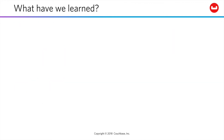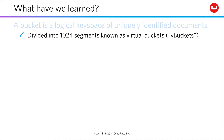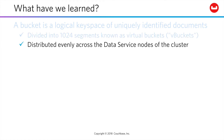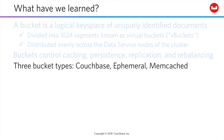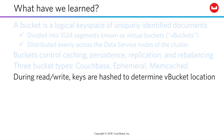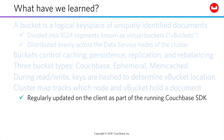So what have we learned? A data bucket is a logical key space of uniquely identified documents, divided into 1,024 segments known as v-buckets, and evenly distributed across data service nodes in the cluster. Data buckets are the control mechanism for caching, persistence, replication, and rebalancing. There are three types: Couchbase, which persists to disk; ephemeral, which are full-featured buckets but do not persist to disk; and memcached, for traditional narrow caching behavior. During read-write operations, document keys are hashed to determine which v-bucket and node will hold the document, and these locations are tracked in the cluster map, which is regularly updated on the client by the SDK.